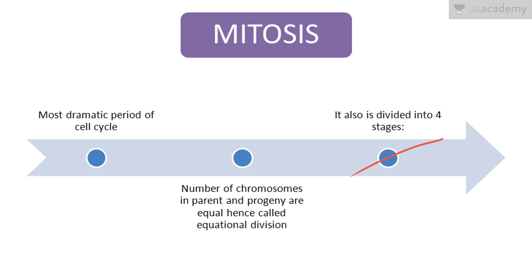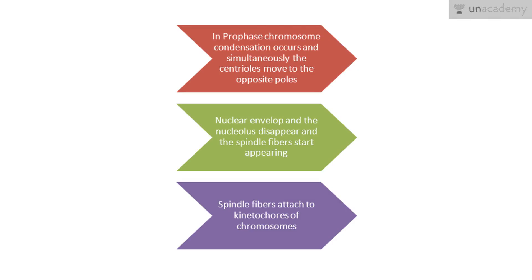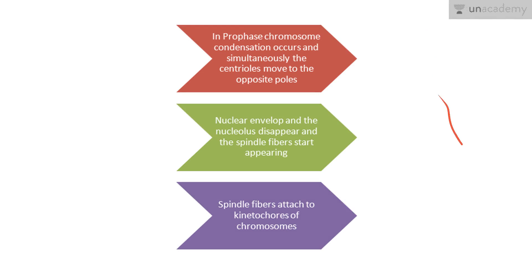The first stage is prophase. In prophase, chromosomes condense, and simultaneously the centrosome moves to the two opposite poles. The nuclear envelope and nucleolus disappear, and the spindle fibers start appearing. The spindle fibers attach to the kinetochores of the chromosomes.